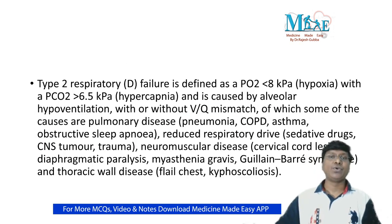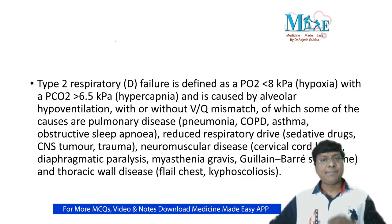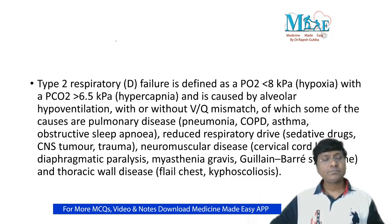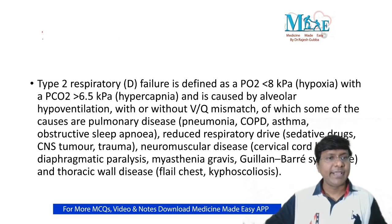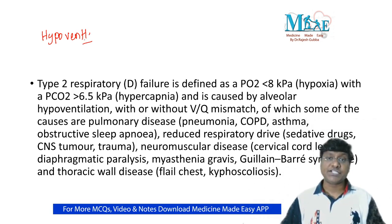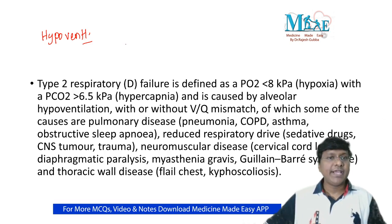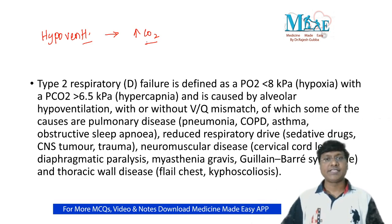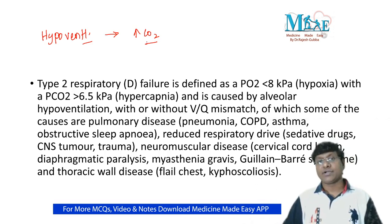In type 2 respiratory failure, the criteria are hypoxia and hypercapnia. Type 2 occurs mainly because of hypoventilation — because whenever there is hypoventilation, carbon dioxide builds up, resulting in respiratory acidosis.